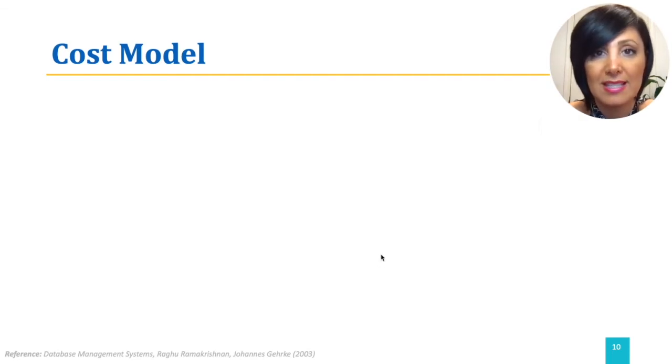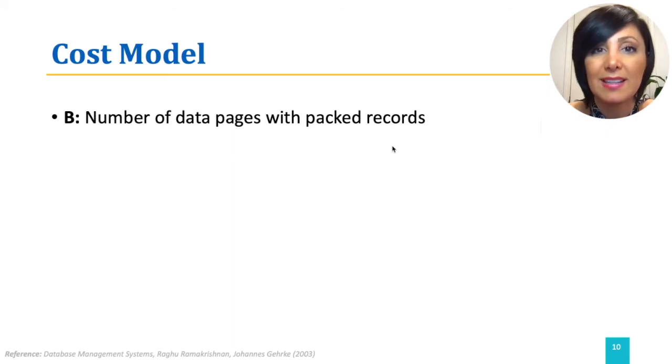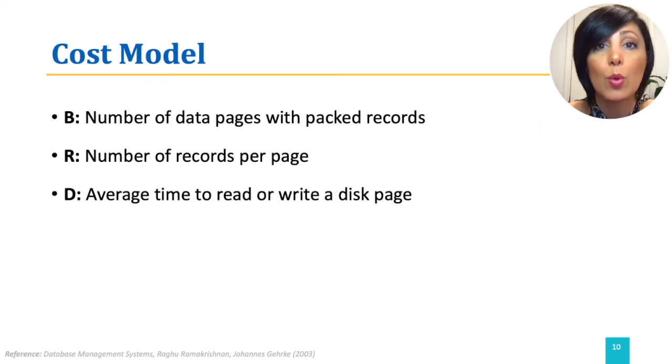To do this, we use B to denote the number of data pages when the data records are packed, meaning there is no wasted space between the records of data. We use R to denote the number of records in each data page. We denote the average time it takes to read or write a page with D, and the average time to process a record with C.